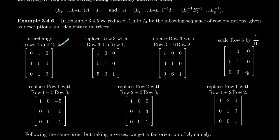The first operation was interchanging rows 1 and 2. We take the identity matrix and interchange rows 1 and 2 to get the elementary matrix with 0, 1, 0 in the first row; 1, 0, 0 in the second; and 0, 0, 1 in the third. For the second operation — replacing row 3 with row 3 plus 5 times row 1 — we take the identity matrix and place a 5 in the 3,1 position. This is why the row operation was written as row 3 plus 5 times row 1, giving us the correct coordinates 3, 1.